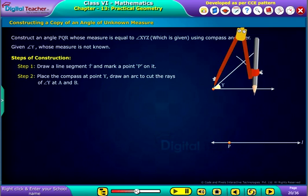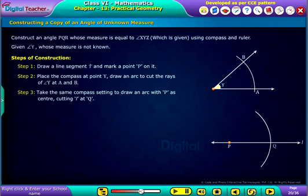Draw an arc to cut the rays of angle Y at A and B. Take the same compass setting to draw an arc with P as center,